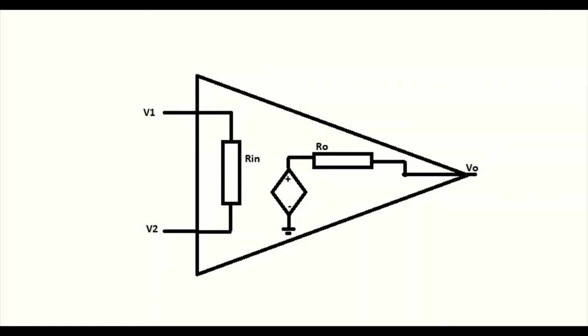The output impedance of the op-amp is denoted as Ro. Ro ensures that the output voltage of the op-amp remains the same for any value of load resistance connected to it. Ideally, the output impedance of the op-amp must be zero. When we look at the open-loop voltage gain of an ideal op-amp, it has to be infinite.